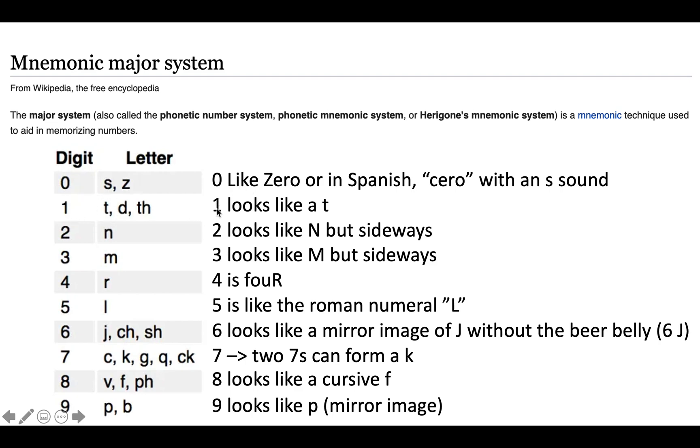One is T. One kind of looks like a T already. So one, it's long and skinny. T is also long and skinny. It's kind of like turned upside down. So there's a T there and there's a T there. All right, two looks like an N but sideways. So two and here's the two. So that's an N.